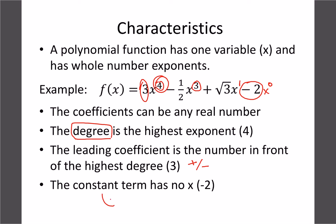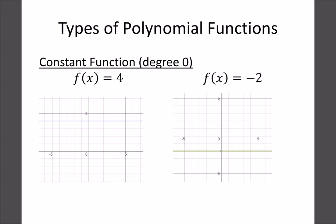The constant term, as we remember from earlier math, is going to give us the location of our y-intercept. A constant function is degree zero — an equation like y equals four. Because we have no x value and no slope, we get a straight horizontal line going on forever through y equals four.